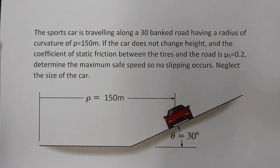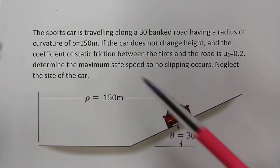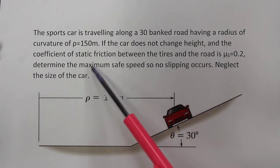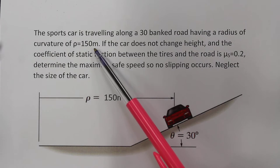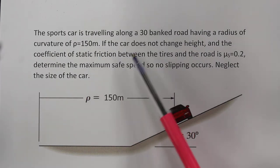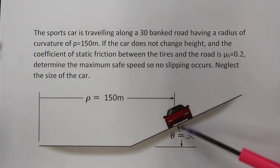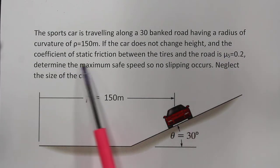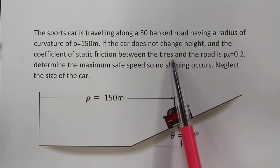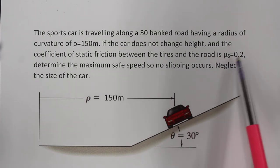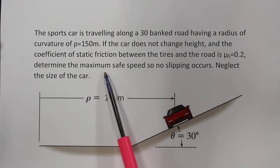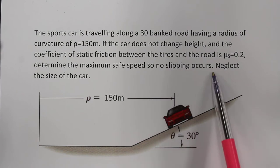In this video I'll be working through the following question. A sports car is traveling along a 30-degree banked road having a radius of curvature of 150 meters. If the car does not change height in the vertical direction, and the coefficient of static friction between the tires and the road is μs equal to 0.2, determine the maximum safe speed so no slipping occurs.